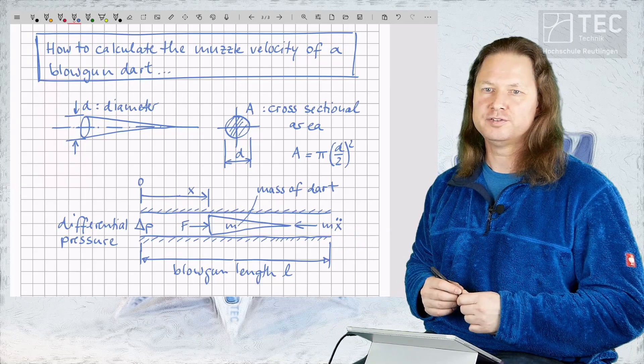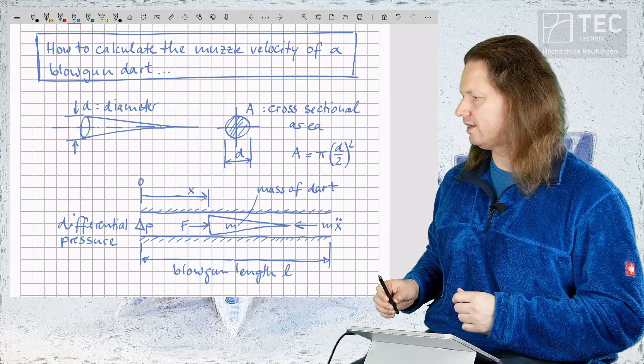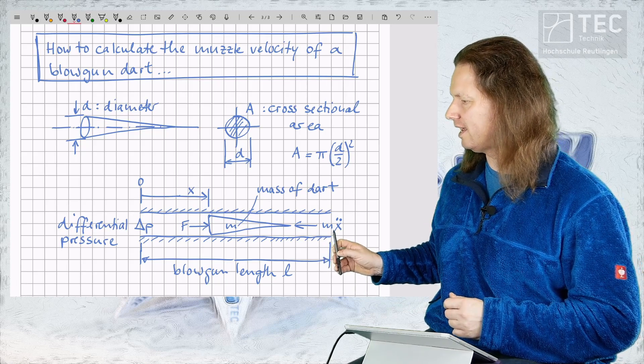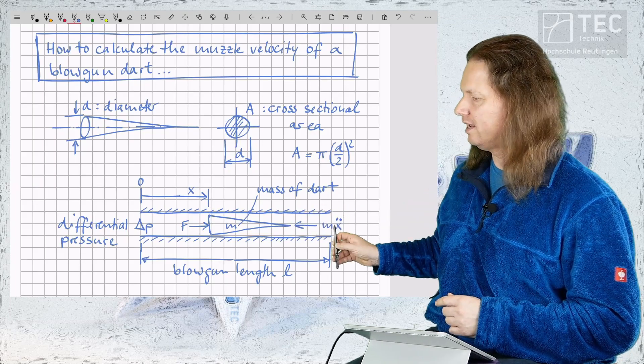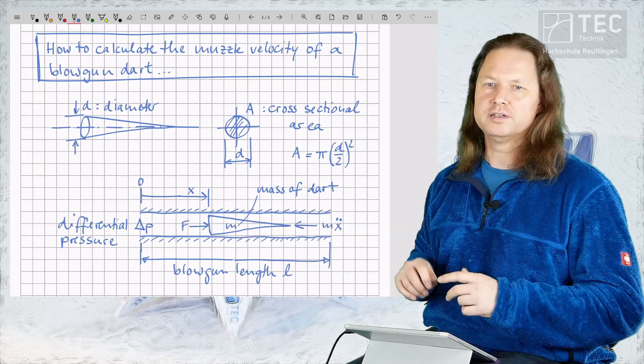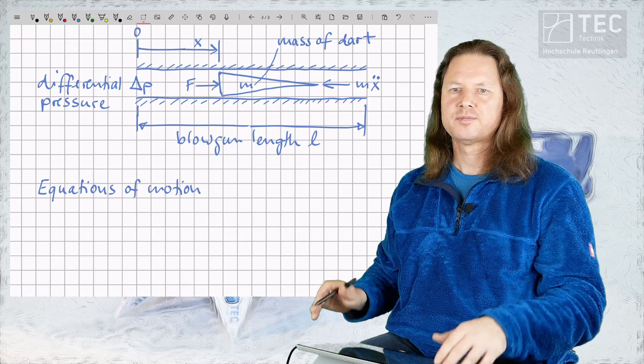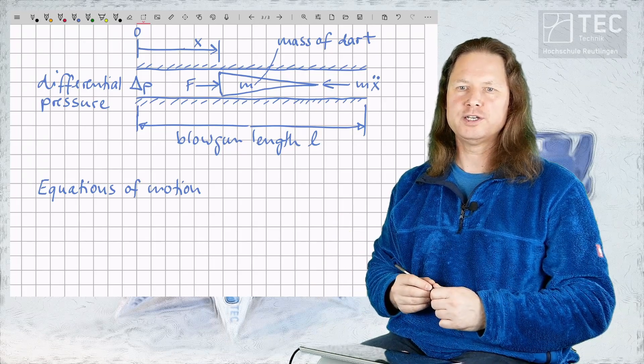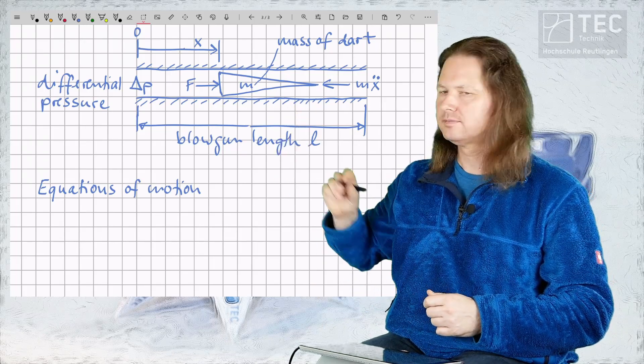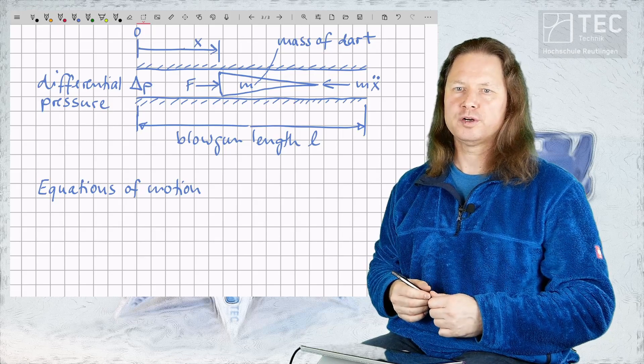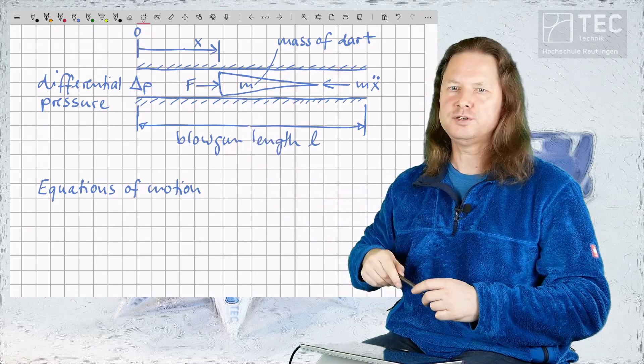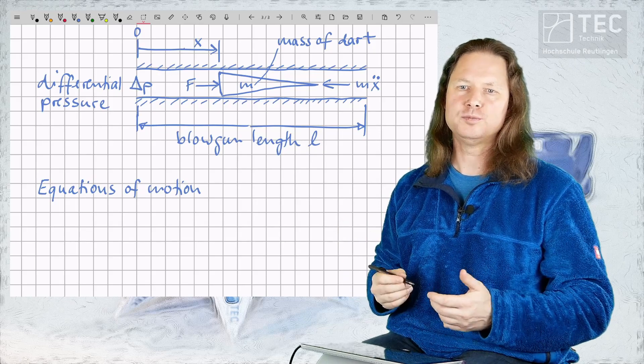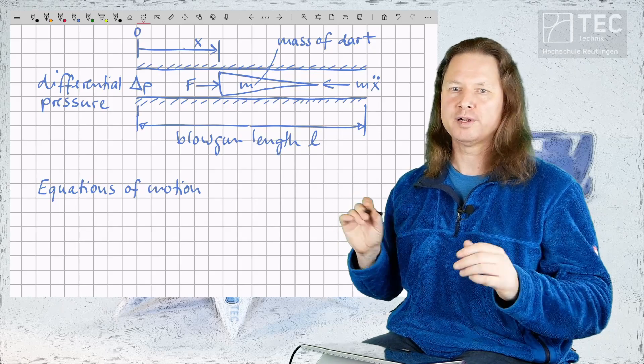As a result of Newtonian mechanics we also have to take into account an inertial force M times x double dot that acts in negative x direction against the motion of the dart. From this model we can derive the equations of motion of the dart. Generally we would also have to take into account friction forces between the dart and the inner lining of the tube. However I assume that these forces are small so we will neglect them for now.